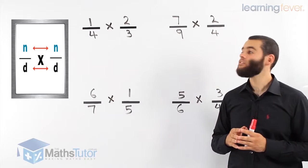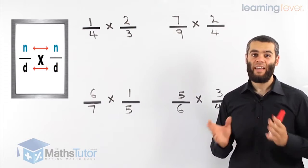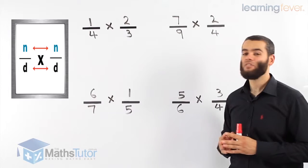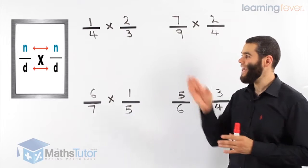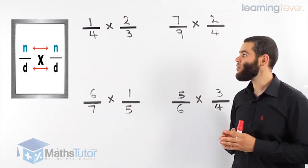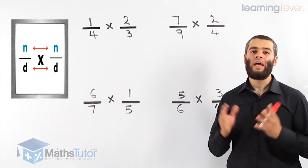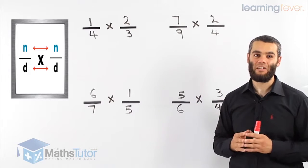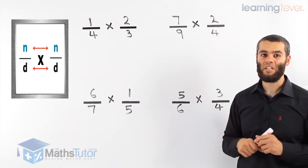The numerator times the numerator and the denominator times the denominator, as marked in the red arrows. Numerators times each other and denominators times each other. So top times top and bottom times bottom. It's that easy. Let's go ahead and do some examples.